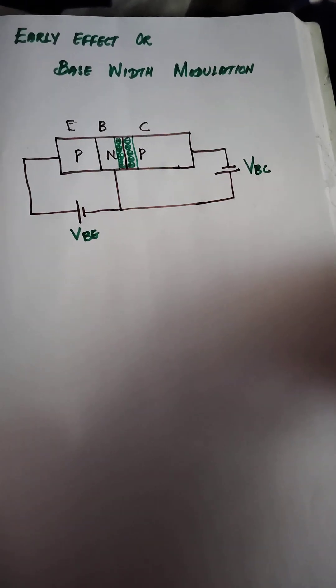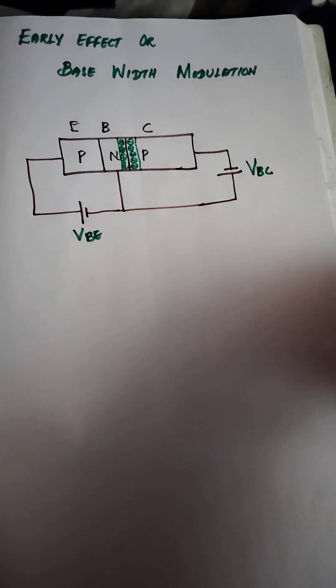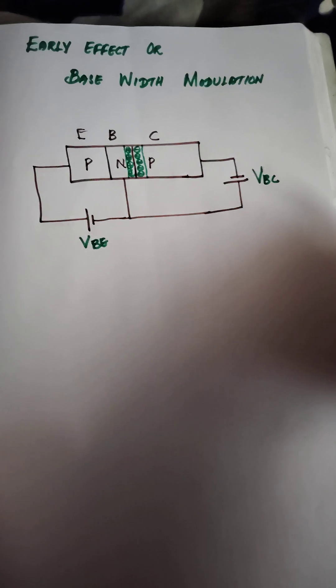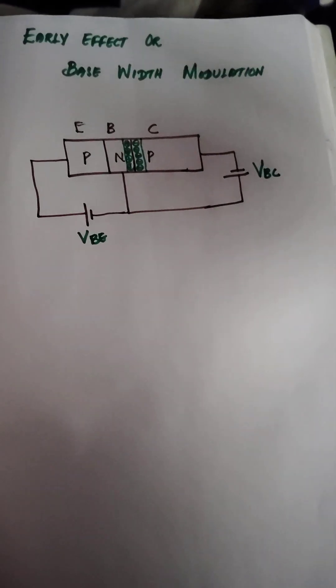There are three terminals in the PNP transistor. In active region, the input side is forward biased and the output side is reverse biased. As we know, when we apply forward bias, the depletion region becomes narrow. When we apply reverse bias, the depletion region increases.